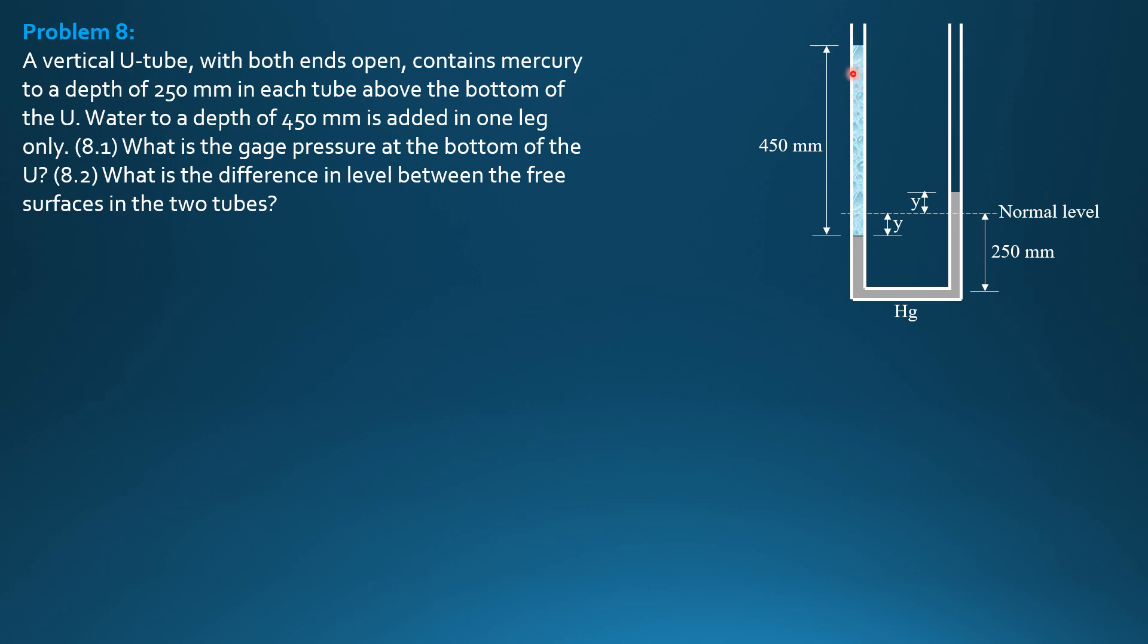Now when water is poured in one leg only, 450 mm deep, this surface from the normal level will be pushed downward. It will be depressed by Y and the other end will be rising by the same amount because the vertical legs of the tube are assumed to have the same size. So this is now the situation.